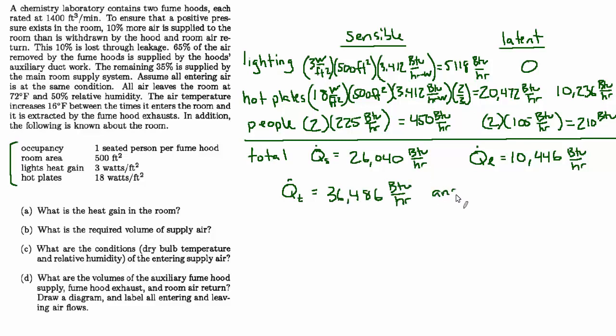And now for B, they want to know the required volume of supply air. We're gonna base that on the sensible heat load and assume that, provided the entering air is dry enough, that the latent load is able to be handled alongside of the sensible load, which is usually the case.